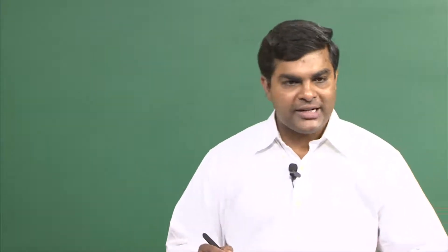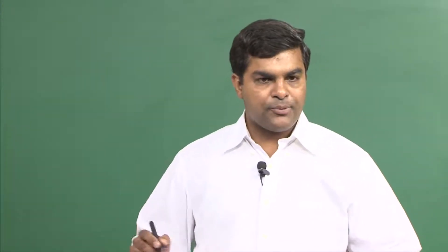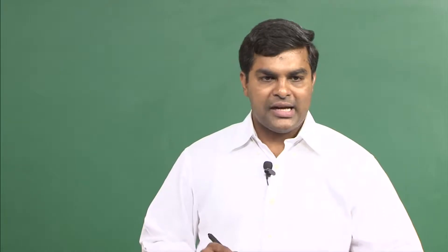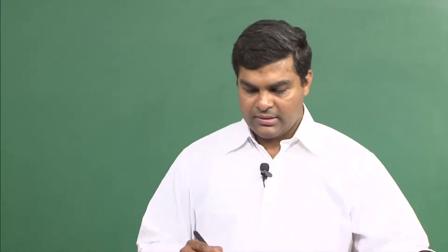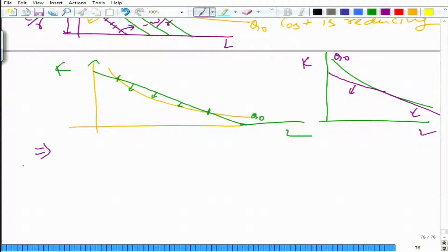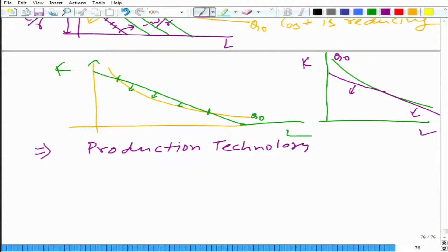Now let us solve some mathematical problems. We have looked at it graphically, and now we will derive the mathematical way to solve this cost minimization problem. The production technology is given by q, which is equal to k plus l.